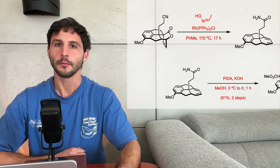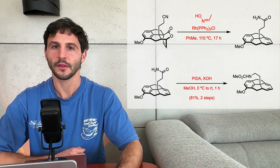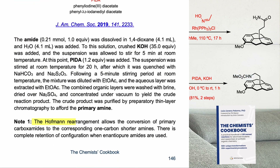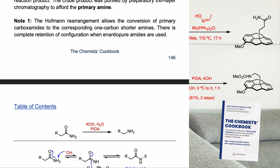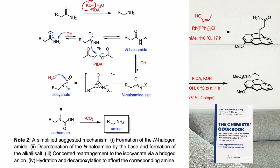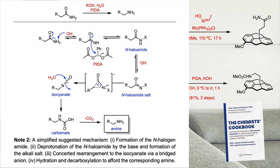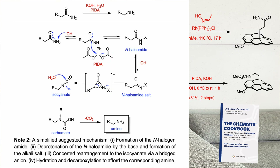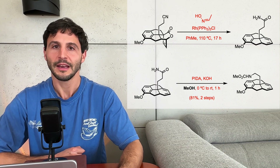The next step involves a Hofmann rearrangement of the primary amide group using phenyliodine diacetate, which produces the corresponding carbamate. The Hofmann rearrangement allows the conversion of primary carboxamides to the corresponding one-carbon shorter amines. Mechanistically, the amide reacts with potassium hydroxide and phenyliodine diacetate to form an N-halo-amide intermediate. This intermediate is then deprotonated by the base, triggering a rearrangement that generates an isocyanate intermediate. In this case, the isocyanate is trapped with methanol, leading to the formation of the desired methyl carbamate.